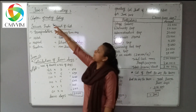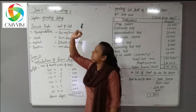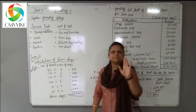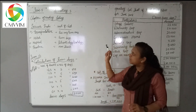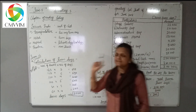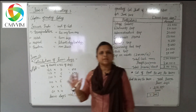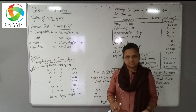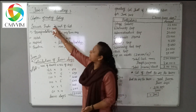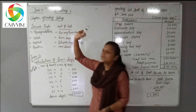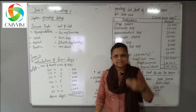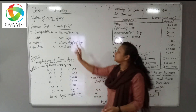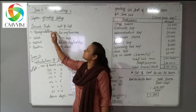Similarly, operating costing is also a method of costing. But the difference is that operating costing is for service provider industries, not for manufacturing industries. Operating costing is the method of costing to establish or find out the cost for service industries.